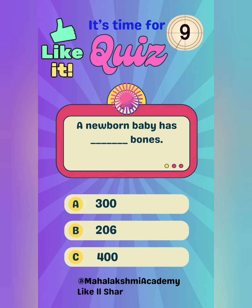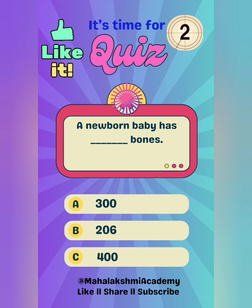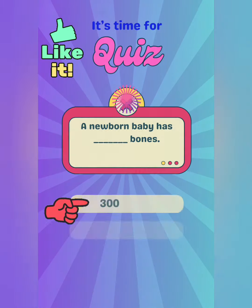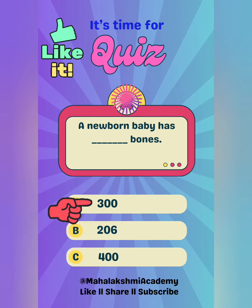A newborn baby has how many bones? The options are 300, 206, or 400. And the answer is 300.